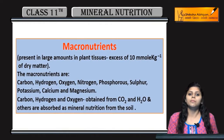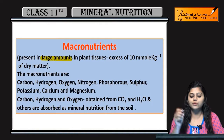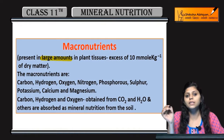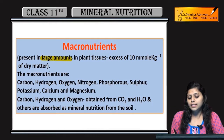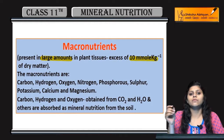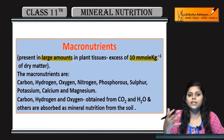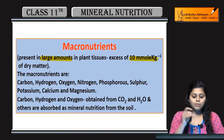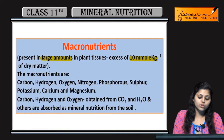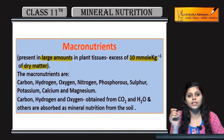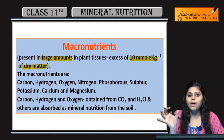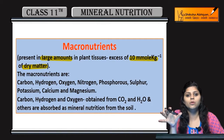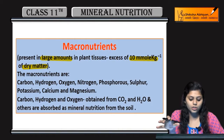Now we will talk about macronutrients. Macro means large amount present in plant tissues. The threshold amount is 10 millimole per kg inverse of dry matter. So macronutrients are present in more than this amount in plant tissues.